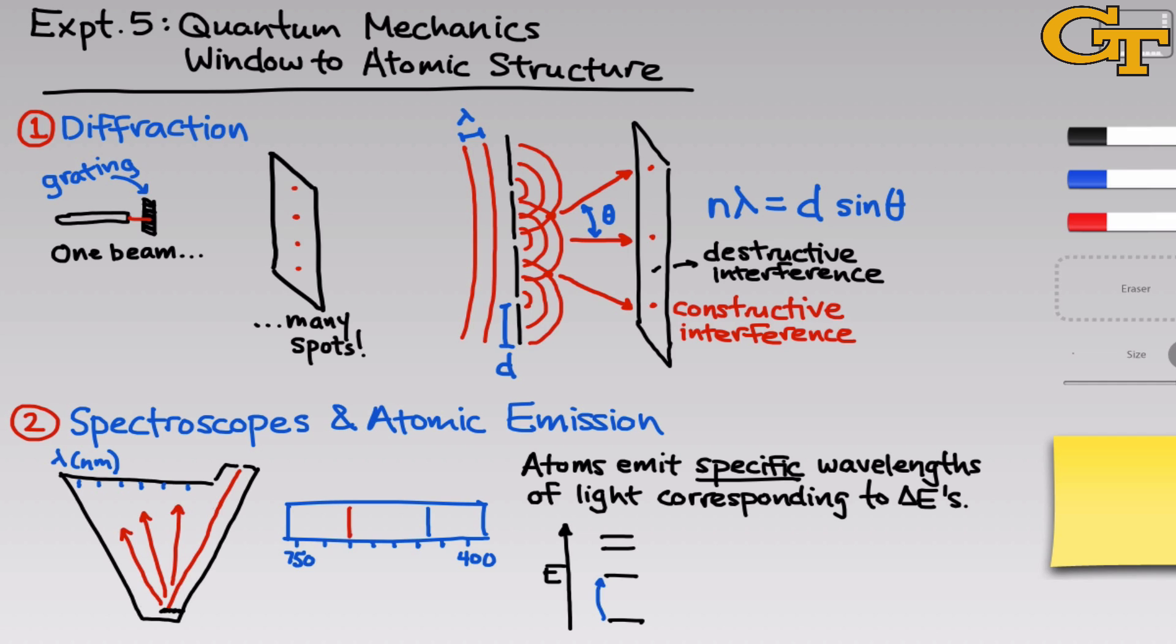The energy of that photon of light is equal to h times its frequency nu. And if we substitute in for the frequency nu, the speed of light divided by the wavelength, we get that the energy difference is equal to h Planck's constant times the speed of light divided by the wavelength.